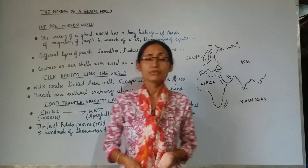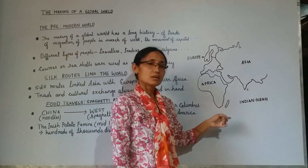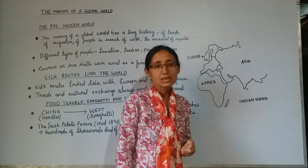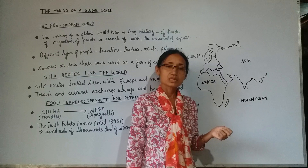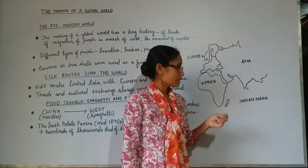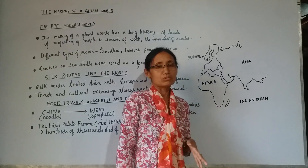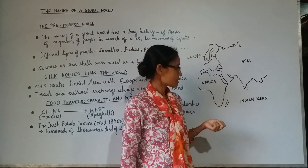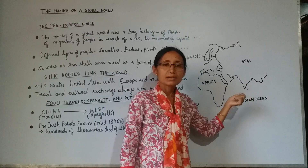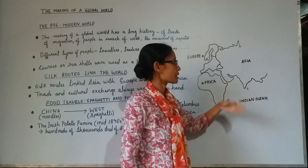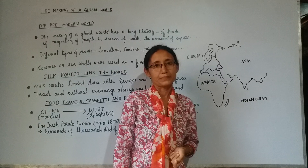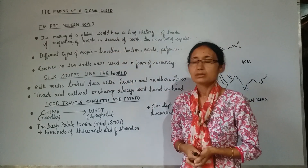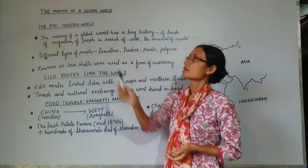Do you know that for more than a millennia, cowries or seashells were used as a form of currency instead of money in various parts of the world? In those days, cowries were found abundantly in the Indian Ocean — collected from the Indian Ocean islands and Maldives — and then spread to various countries such as China and Africa. So this is the introductory part of the pre-modern world topic.